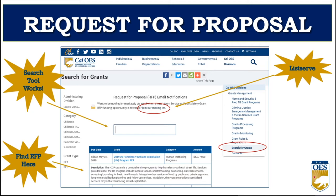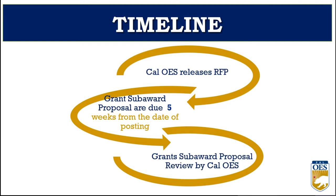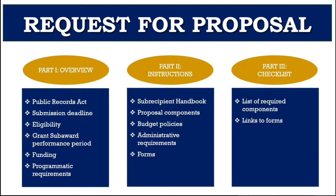CalOES released the Listos California Tribal Grants Program request for proposals on January 25th, 2022, and applicants have approximately five weeks to put the proposal packet together from that date. Once complete, applicants will need to email a copy of the proposal packet to the Listos Grant Unit. The RFP has three parts: Part 1 explains what you have to do — the Public Records Act, submission deadline, eligibility, grant support performance period, funding, and programmatic requirements.